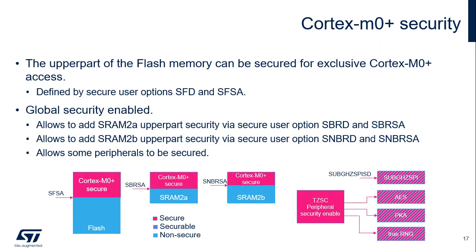Cortex-M0+ security is enabled by clearing the flash security disable option. The secure flash starts from the address in the secure flash start address option. In addition to the flash memory, the SRAM2A and SRAM2B security can also be enabled by secure backup RAM disable, secure backup RAM start address, secure non-backup RAM disable, and secure non-backup RAM start address options. The securable sub-gigahertz serial peripheral interface can also be enabled by sub-gigahertz serial peripheral security disable. Securable peripherals like the Advanced Encryption Standard Accelerator, Private Key Accelerator, and True Random Number Generator may be secured at runtime by register bits in the TrustZone security controller IP.